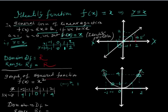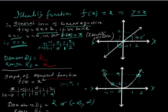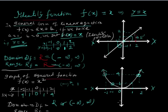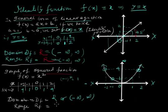By the vertical line test, for every x there is only one point, so this is the graph of a function — the squared function. For every positive or negative x, y is positive. The domain is all real numbers from -∞ to +∞, which is R. The range is from 0 to +∞, since the values of y are only non-negative, with no negative values of y on the graph.